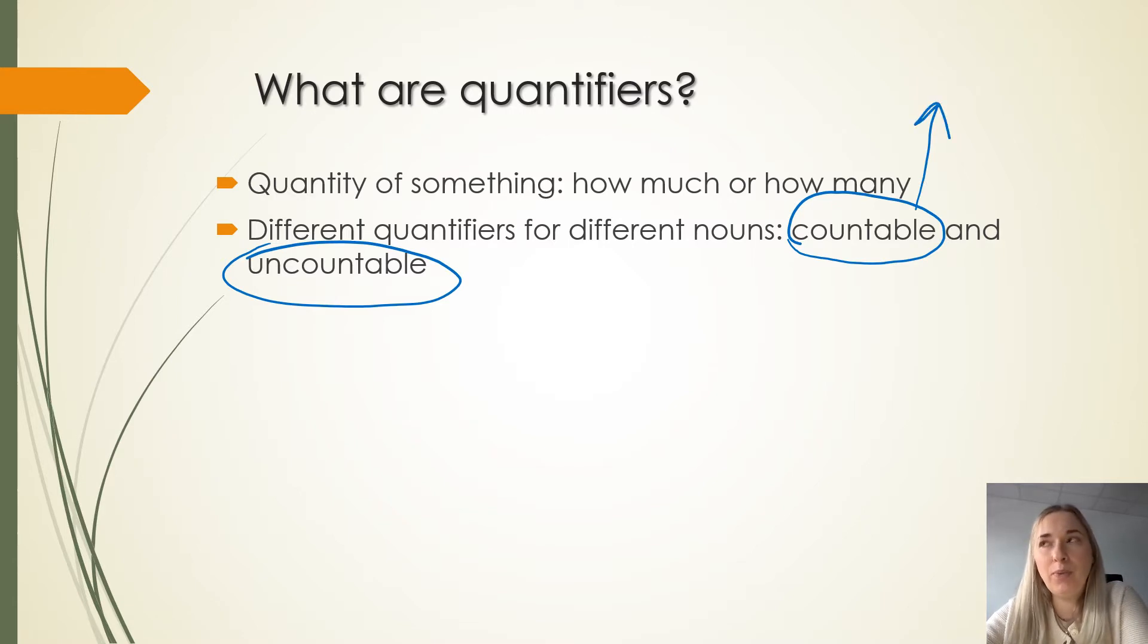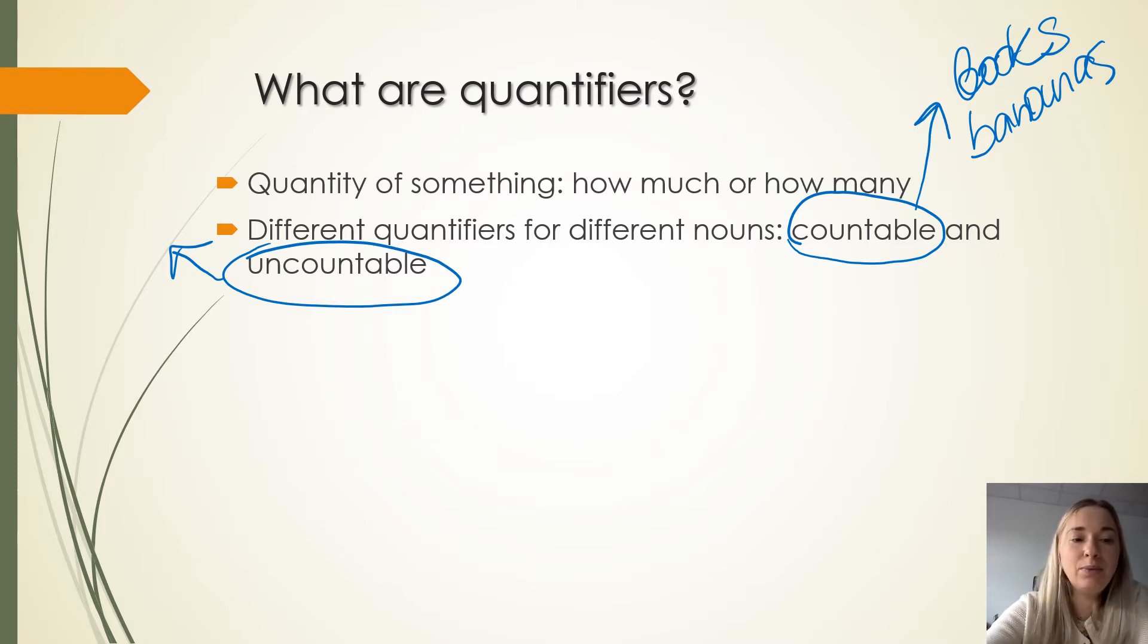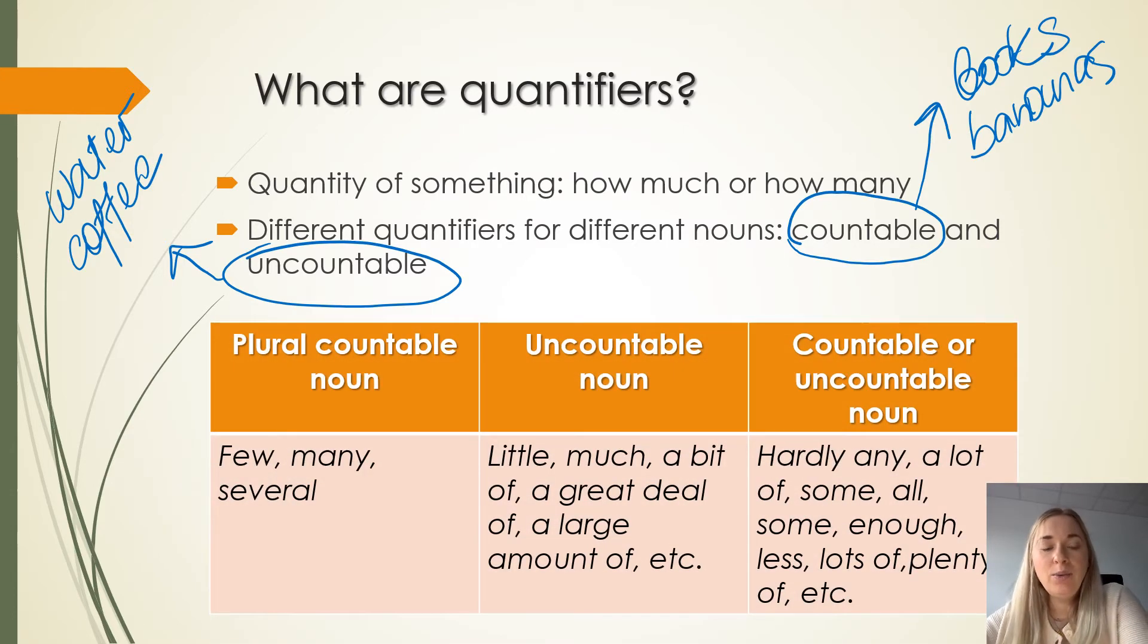Countable nouns are nouns you can count, for example books or bananas. Uncountable nouns are those you cannot count, for example water or coffee.